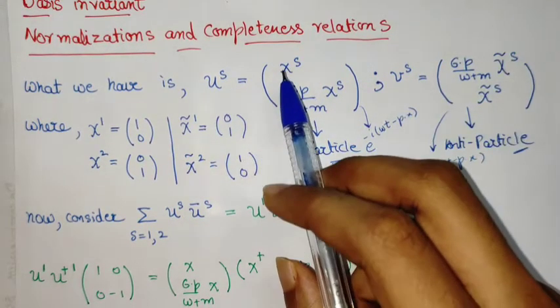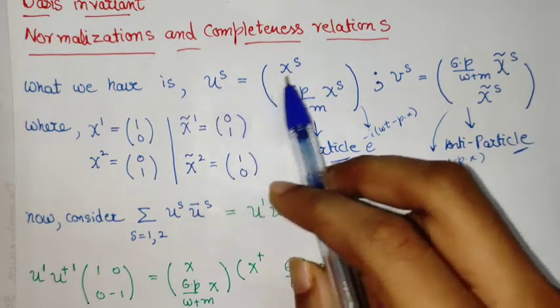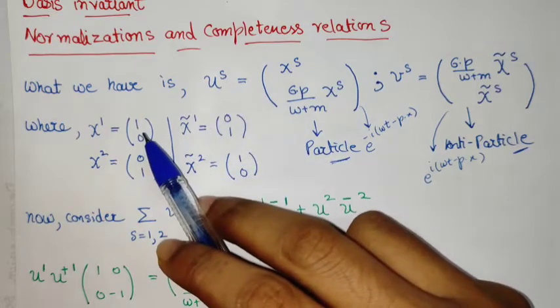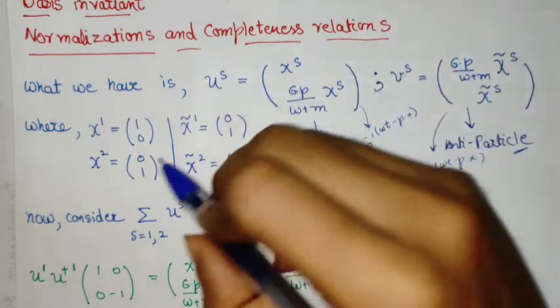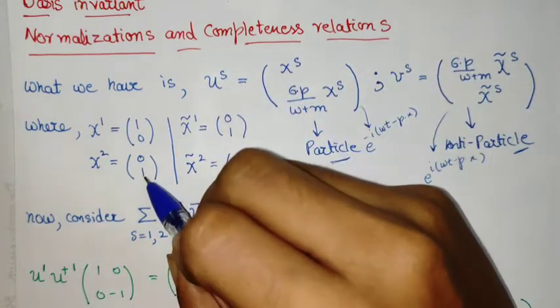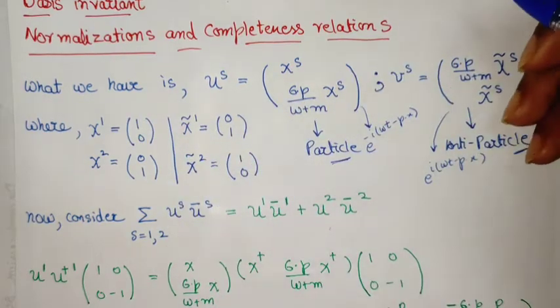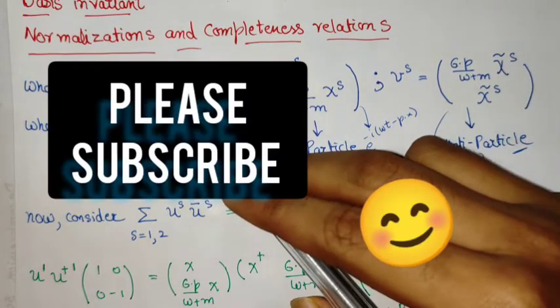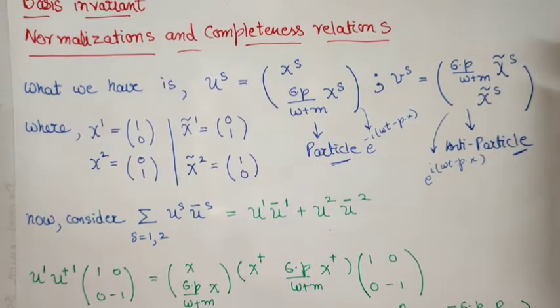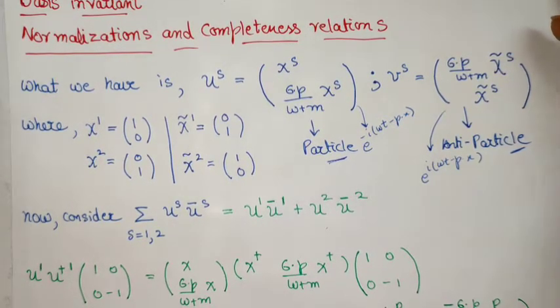Another important thing is that this s that I have written, for s equal to 1, you have one solution of particle. Then s equal to 2 gives you the second solution of the particle, like the 0 qubit and the 1 qubit. And for vs, it is opposite. This opposite nature arised from looking at this helicity or chirality.